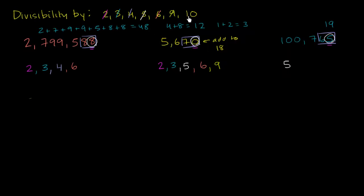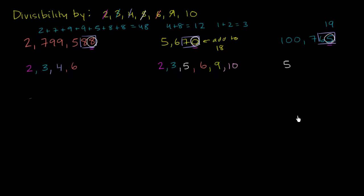Finally, divisibility by 10, which is the easiest one of all: you just have to see if you have a 0 in the ones place. The first number does not have a 0 in the ones place, so it's not divisible by 10. The second number does have a 0 in the ones place, so it is divisible by 10. The third number does not have a 0 in the ones place, so it's not divisible by 10. Another way to think about it: you need to be divisible by both 2 and 5 to be divisible by 10, but the easiest check is just looking for a 0 in the ones place.